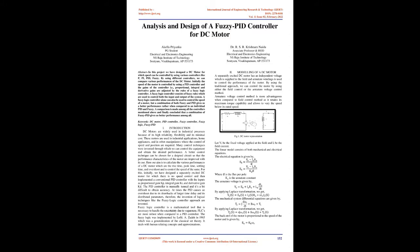Here our aim is to calculate the various performances of a DC motor which are the rise time, peak time, settling time and overshoot, and to control the speed of the same. For this, initially, we have designed a separately excited DC motor for which there is no speed control and then implemented a conventional PID controller with the inputs as proportional gain Kp, integral gain Ki, and derivative gain Kd. The PID controller is manually tuned and it's a bit difficult to obtain accuracy.